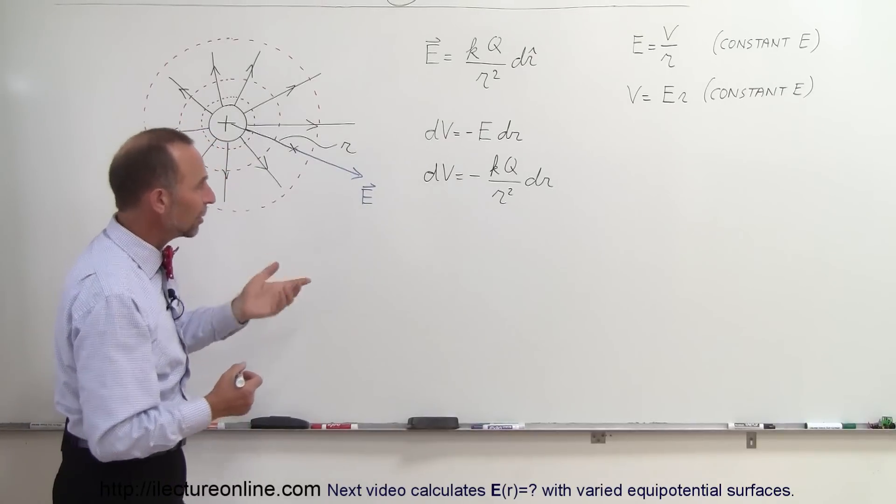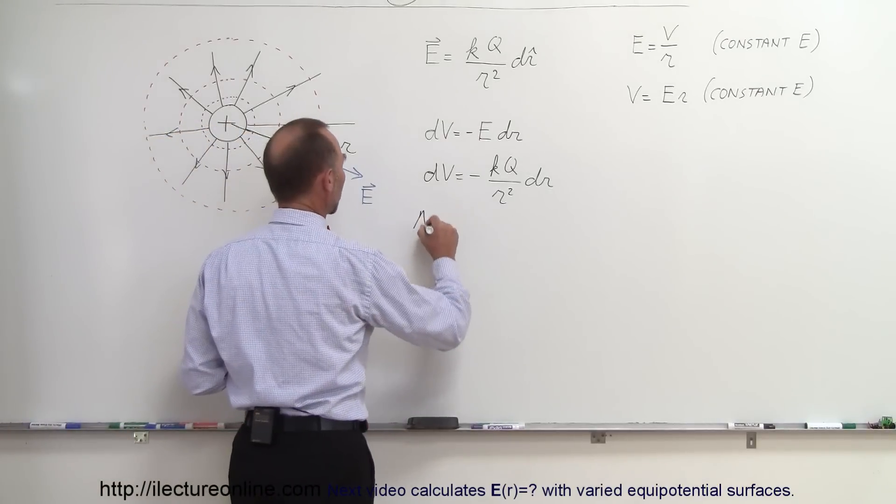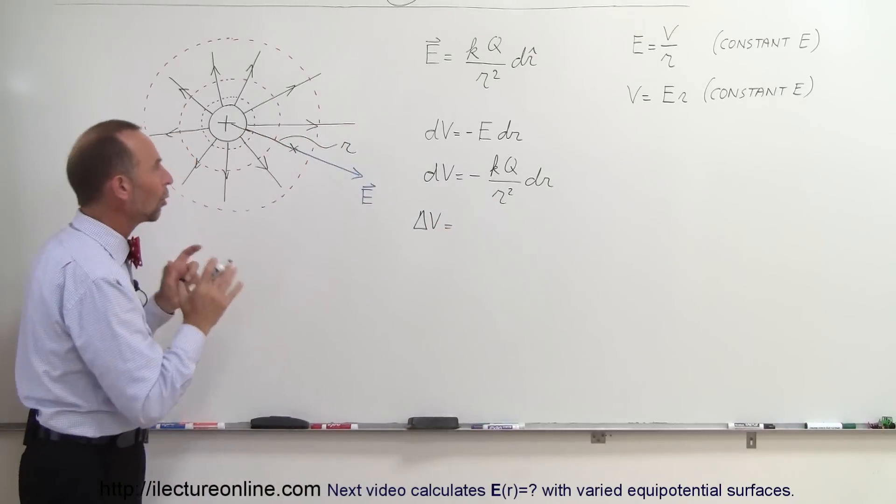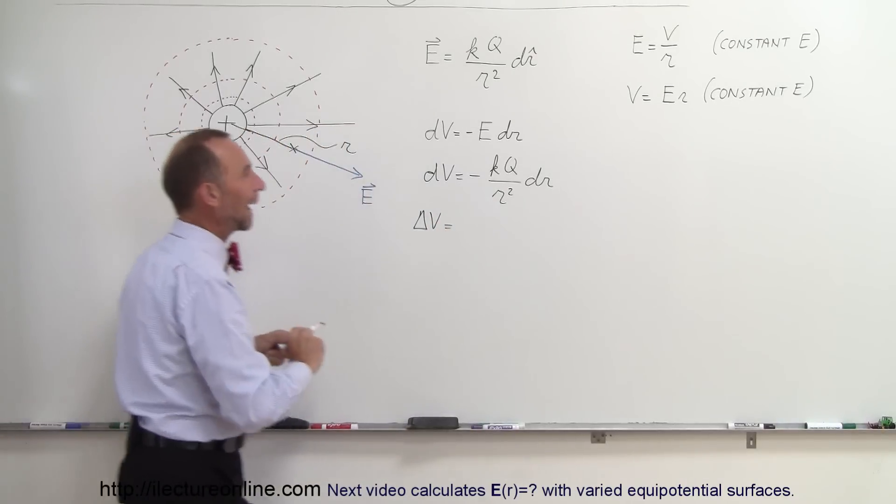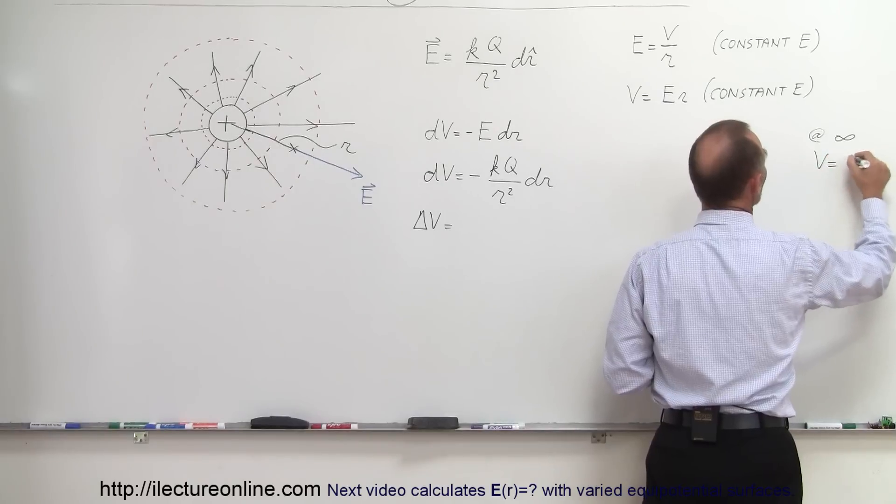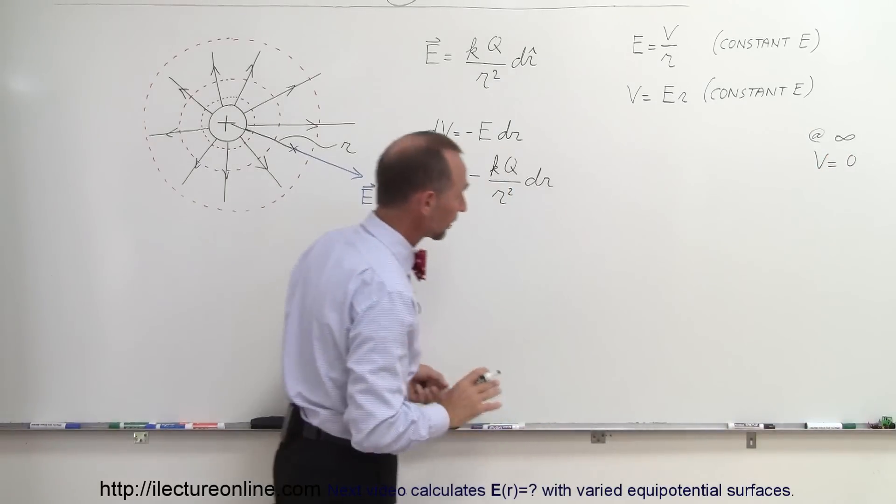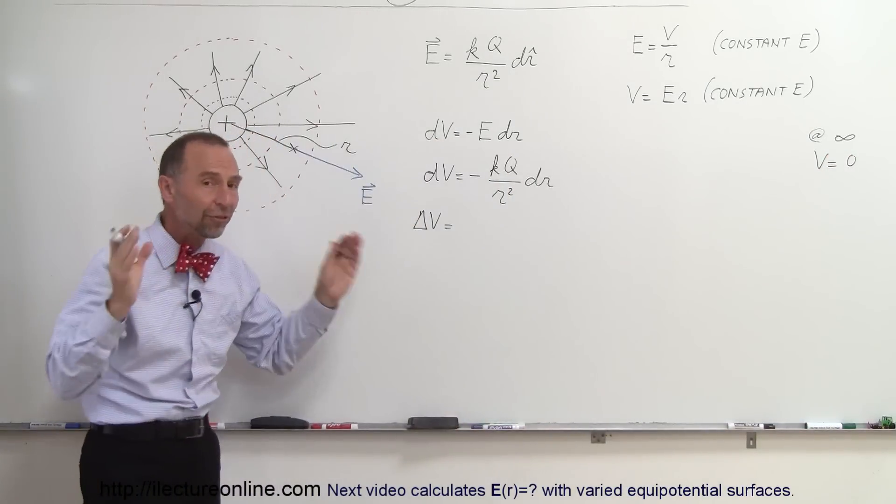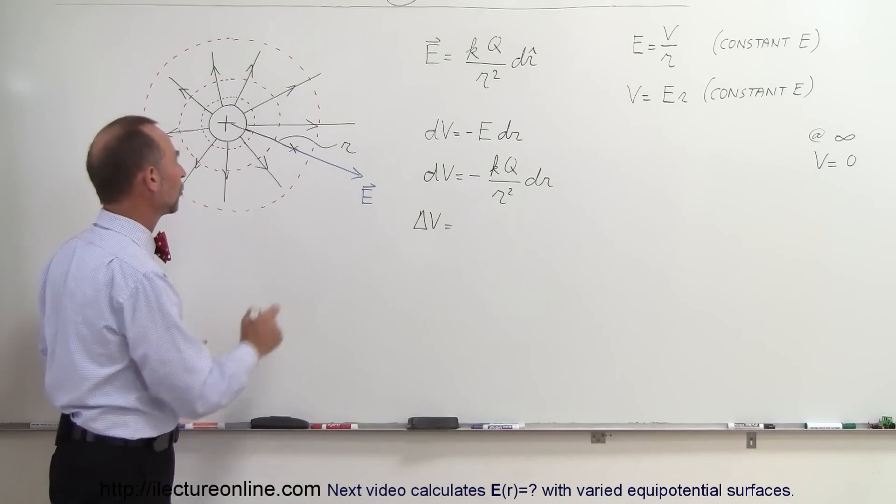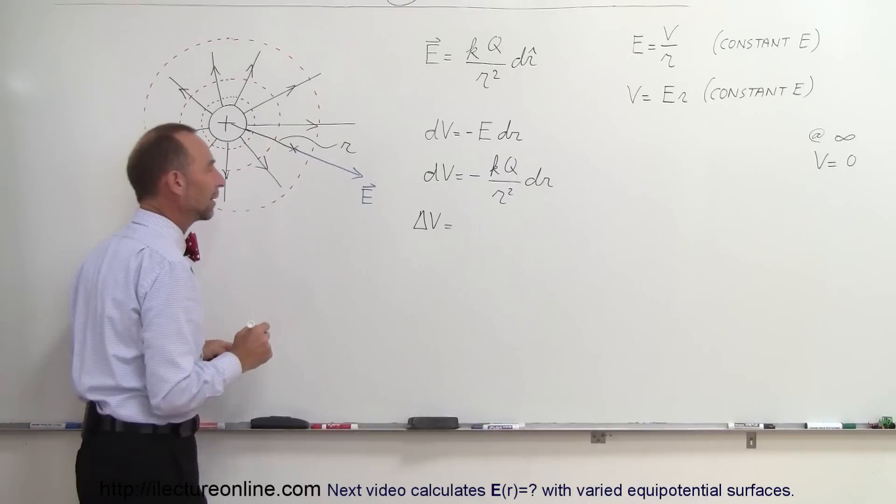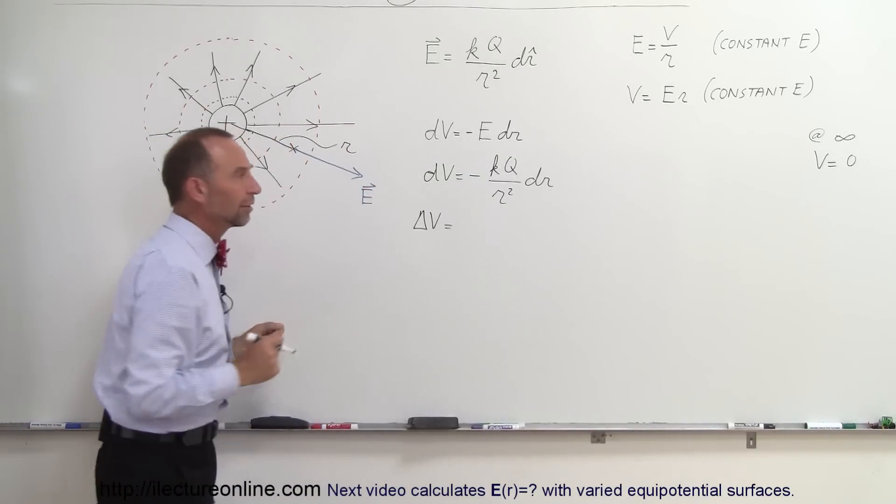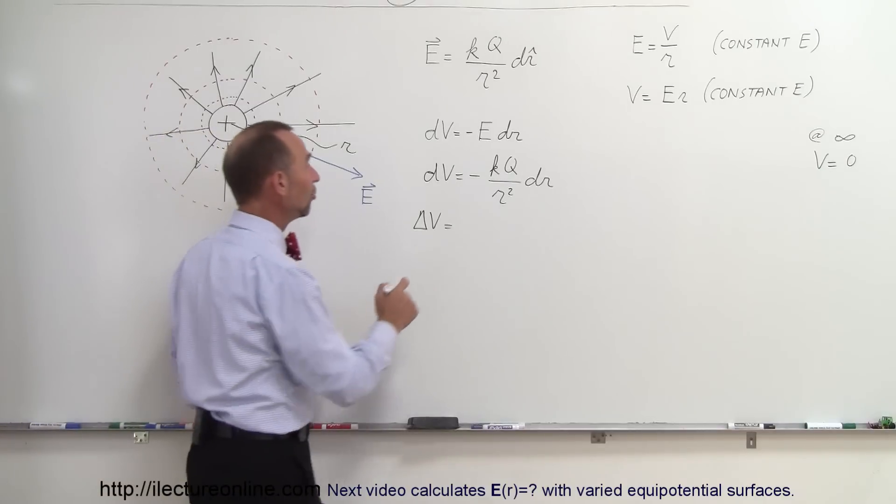Now what we need to do is integrate. We can then say that the change in potential, and whenever we talk about the potential around a point charge like that, we assume that at infinity the potential is equal to zero. That's the standard, and using that we then find the difference in the potential, the delta V, the difference of potential from one location to another. If we want to know what the potential is at this point, we can say relative to infinity, a point at infinity.